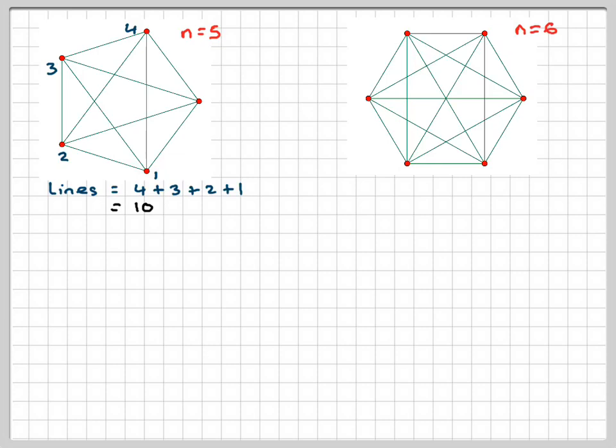By now I will realize there's a pattern for N equals 6. All I'm going to have to do is add in five to that. Five, four, three, two, one. So the lines will be 5 plus 4 plus 3 plus 2 plus 1, which is 15.